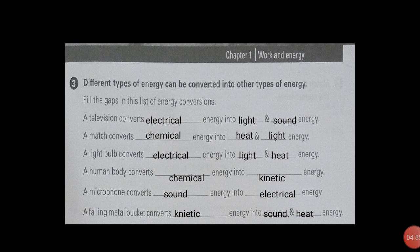Number second: A match converts. A match box, when we burn it, is chemical energy. It converts into heat and light. So chemical energy converts into heat and light. A light bulb uses electrical energy, and it gives light and heat. So it converts into light and heat.